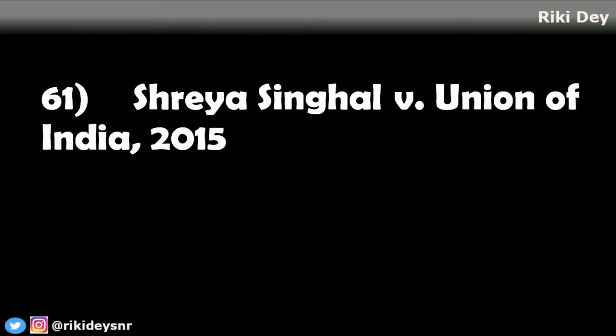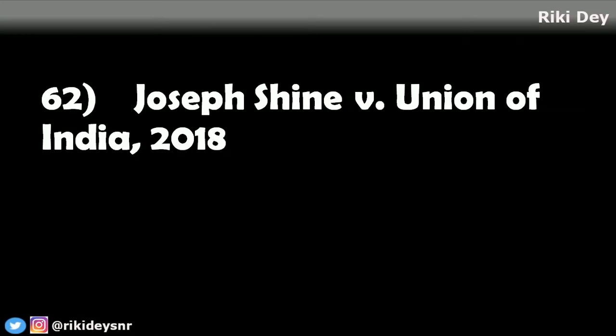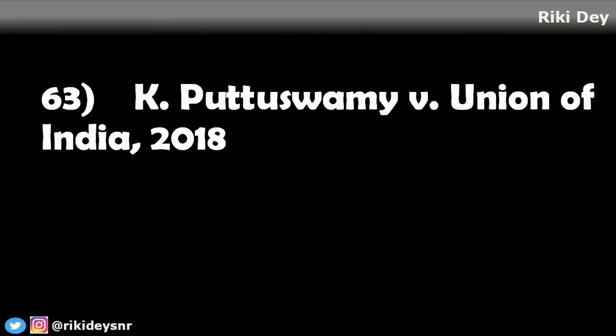Joseph Shine versus Union of India: Section 497 of the IPC is a codified rule of patriarchy. Section 198(2) of the CrPC, which gives the husband the exclusive right to prosecute his wife's lover, is manifestly arbitrary.